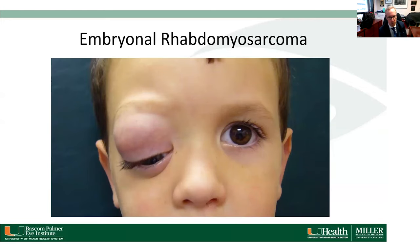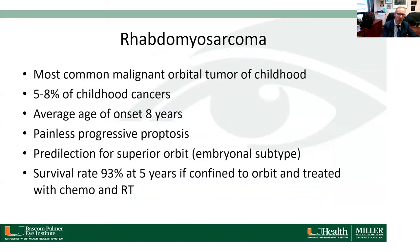Rhabdomyosarcoma is the most common malignant orbital tumor of childhood. This child presented with a rhabdomyosarcoma causing downward displacement of his right eye and painless progressive proptosis. It comprises about five to eight percent of childhood cancers. The average age of onset is between seven and eight years. Patients usually present with painless progressive proptosis, and there is a predilection for the superior orbit, especially in the embryonal subtype, which is the most common.